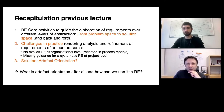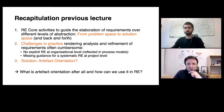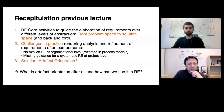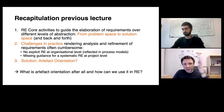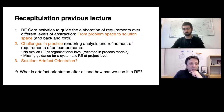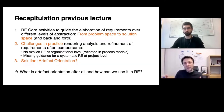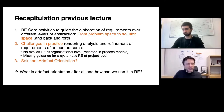Before we start, let's recapitulate what we did in the last lecture. We focused on two major discussion points: the introduction of elementary core activities in requirements engineering to guide the elaboration of requirements over different levels of abstraction, and we discussed the symbiotic relationship between the problem space and the solution space.